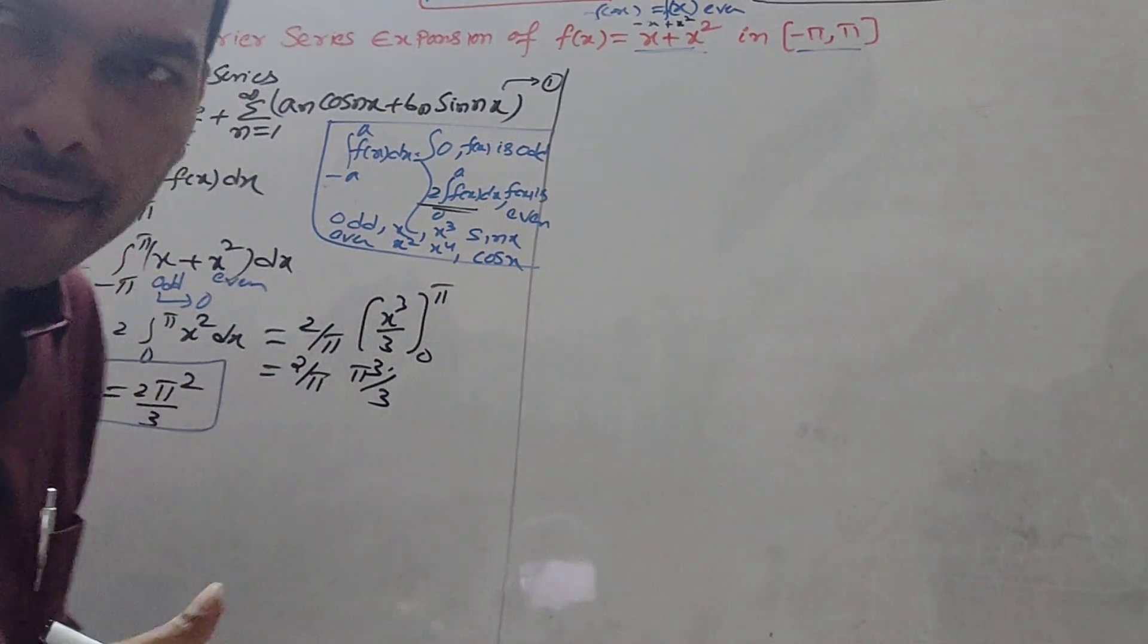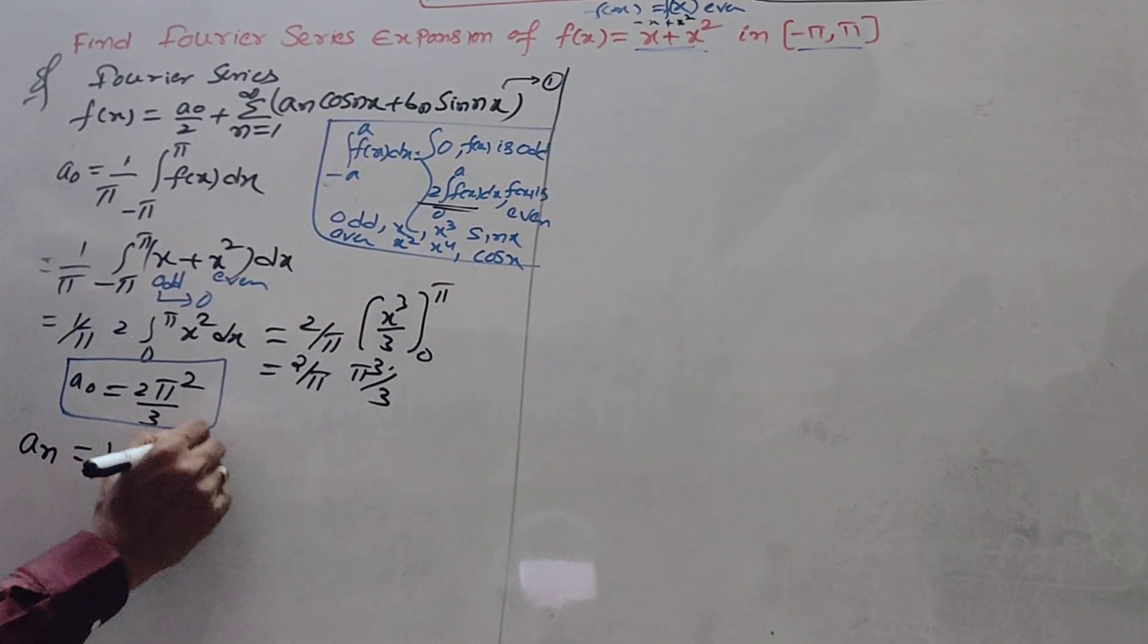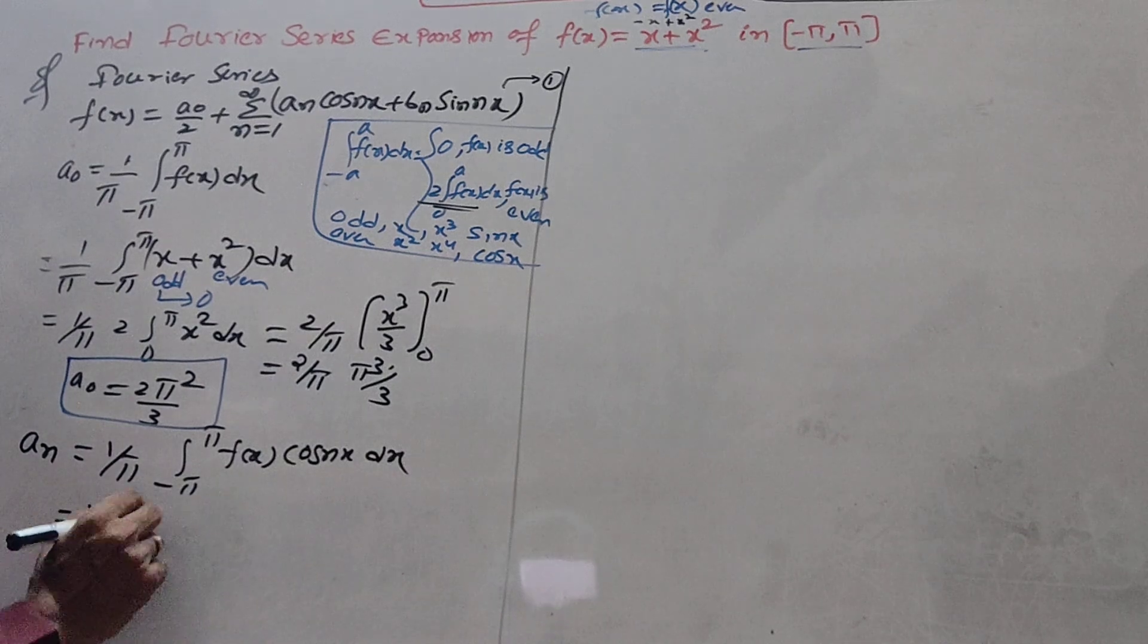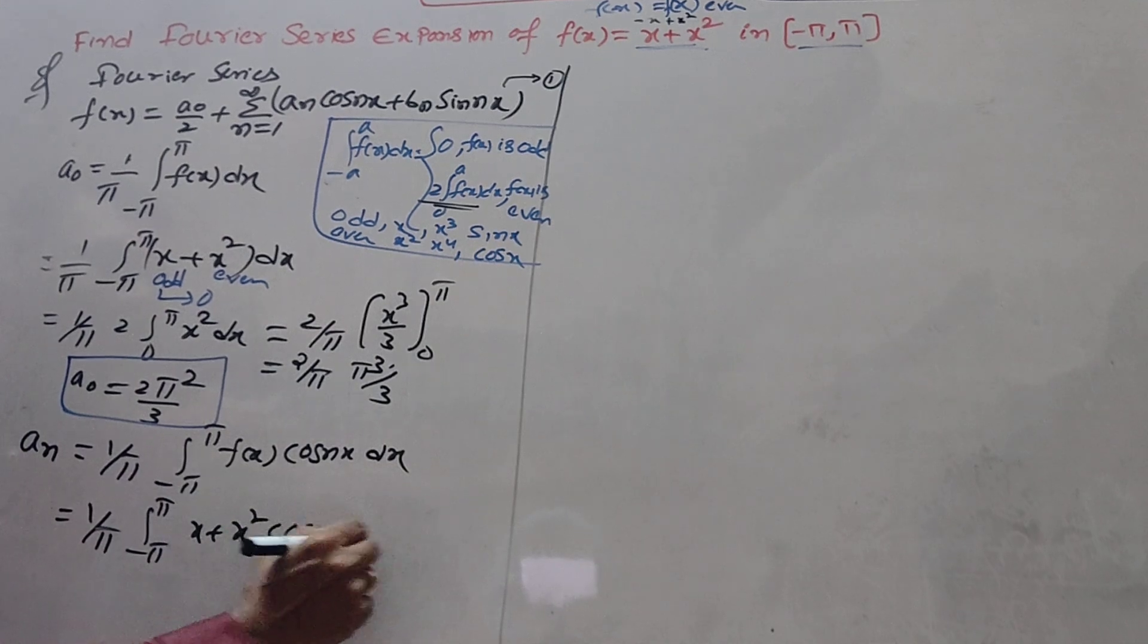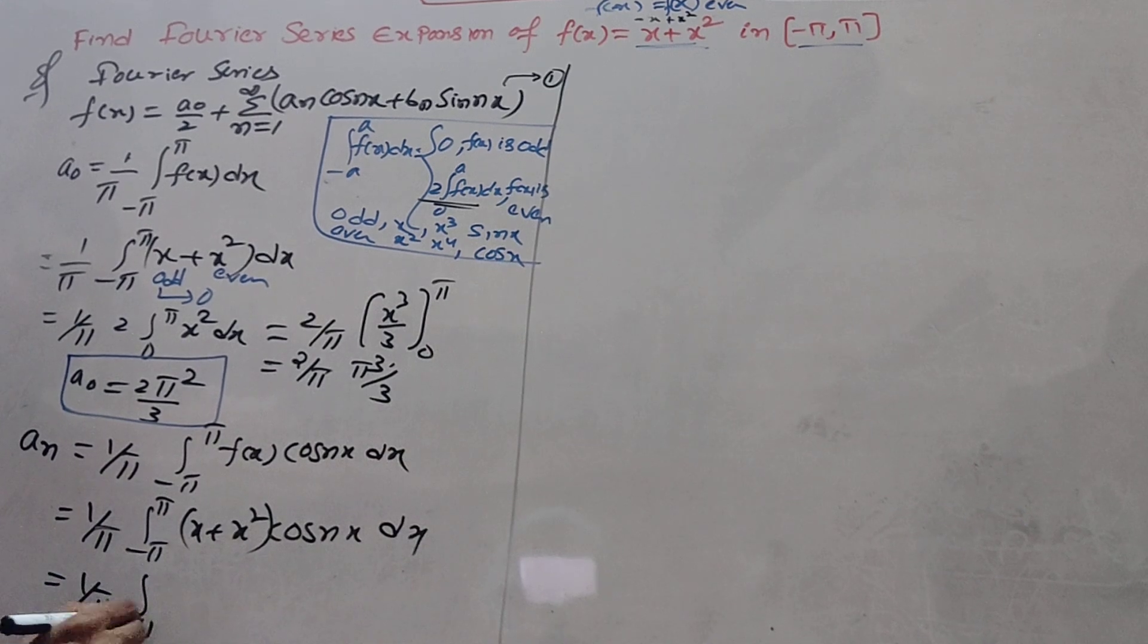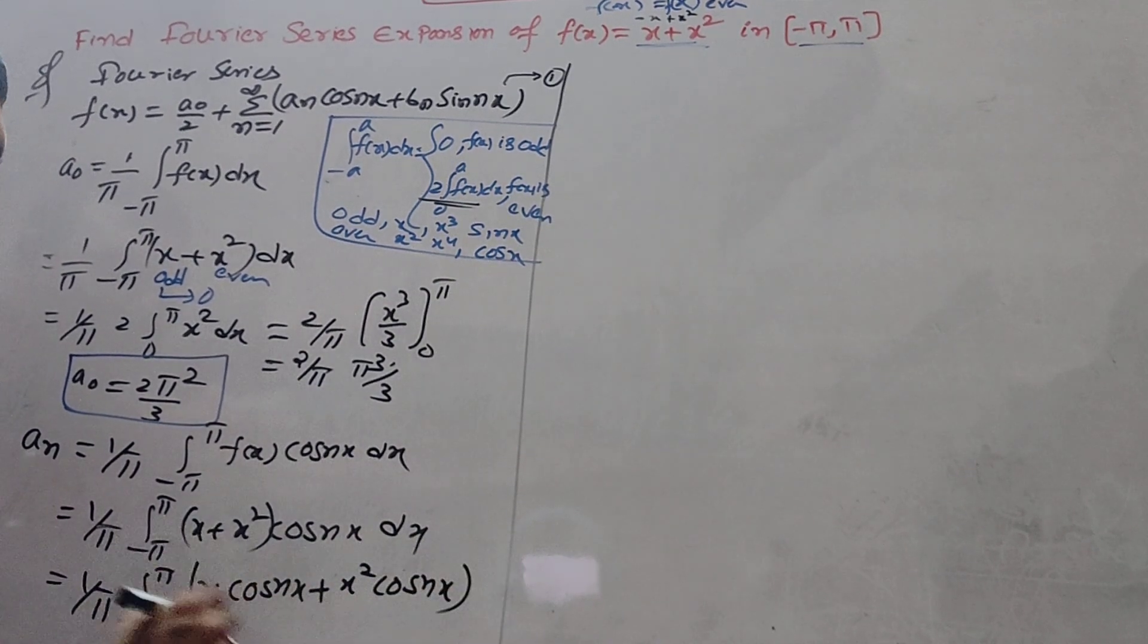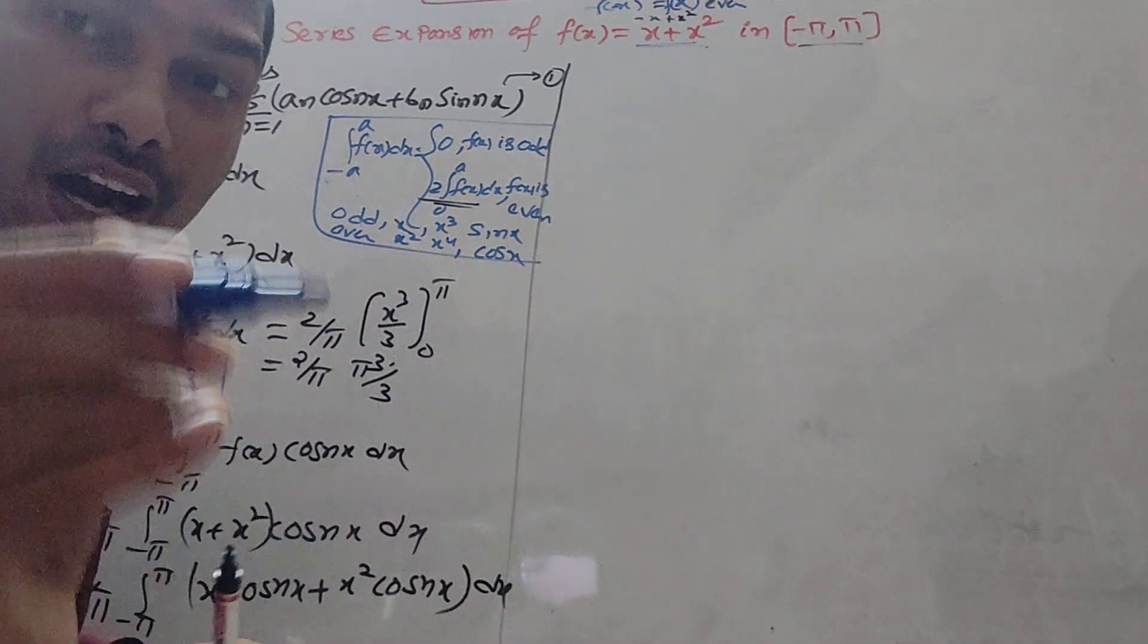Next, we find aₙ. aₙ = 1/π integral from minus π to π of f(x) cos nx dx. What is f(x)? (x + x²) cos nx dx. Let's multiply: 1/π integral from minus π to π of (x cos nx + x² cos nx) dx. Now I will tell you the even-odd technique to decide.